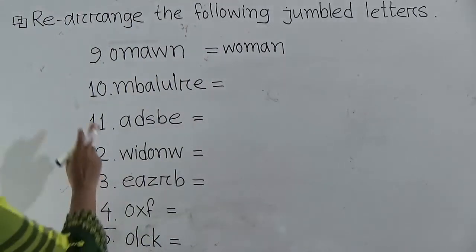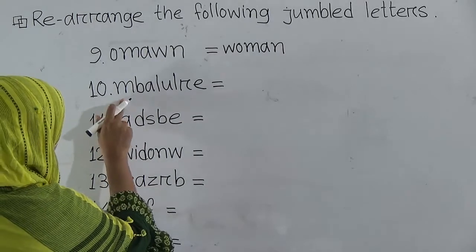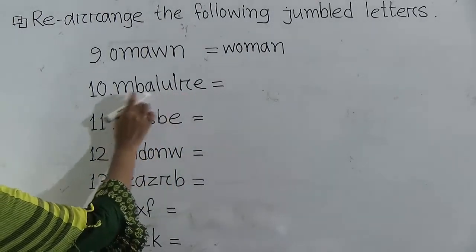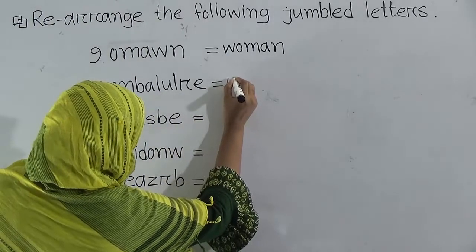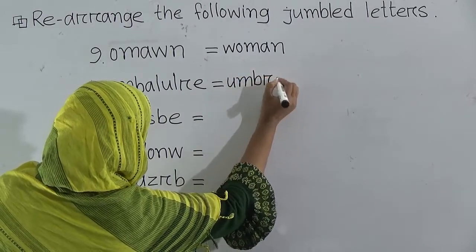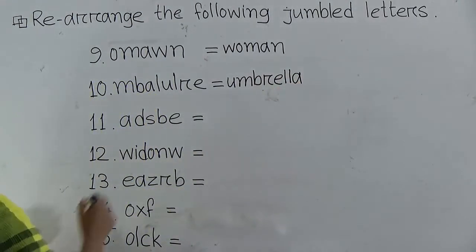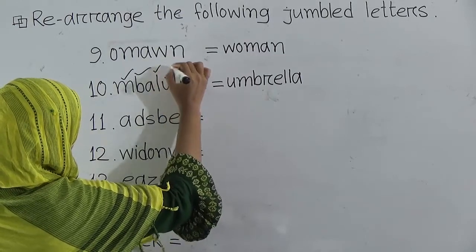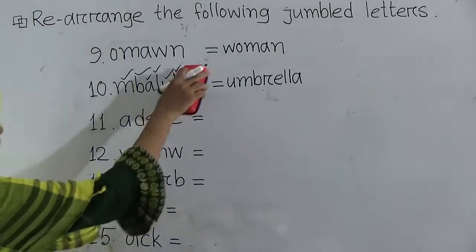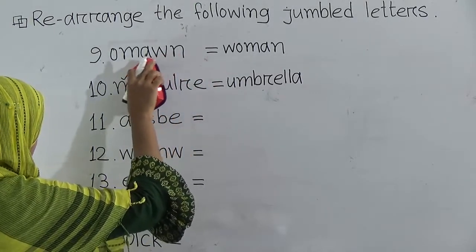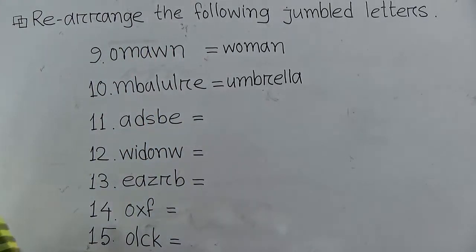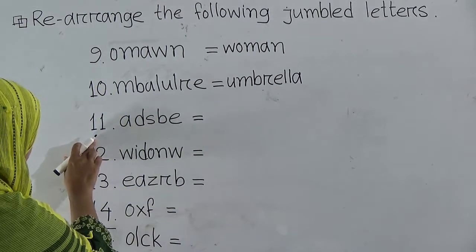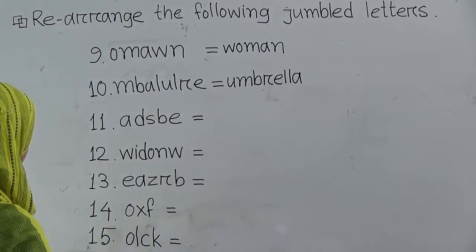Number 10: the given letters are M, B, A, L, U, L, R, E. Can you guess what the word will be? Try to arrange it. I am writing U-M-B-R-E double L-A — umbrella. The word will be 'umbrella.' Again, no need to mark here; just arrange the letters and write a meaningful word. Our word will be 'umbrella' — U-M-B-R-E double L-A.